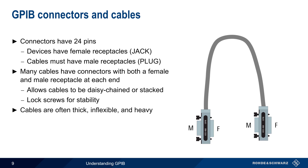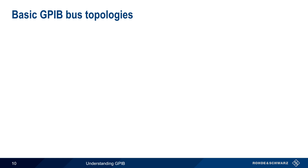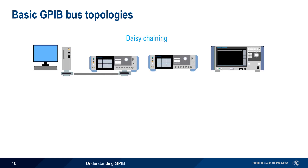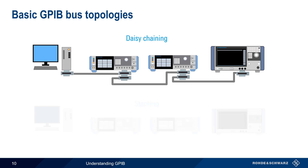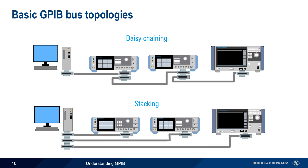GPIB cables tend to be rather thick, inflexible, and heavy. This is partly due to the shielding used to prevent data corruption, and numerous lines are implemented as signal-ground combinations in the form of twisted pairs, further adding to the cable's bulk. There are two general methods for connecting multiple devices to a GPIB bus: daisy chaining, where the cable originates at the controller and each additional instrument is connected sequentially; and stacking, or a star arrangement, where cables are stacked using the dual gender connectors. It's also possible to combine these topologies.